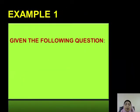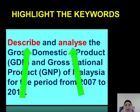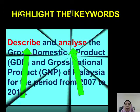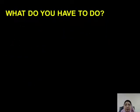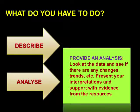Let us look at an example. We first need to identify the keywords. There are two keywords here: describe and analyze. Now that we have the keywords, we have an idea of what to do. The question says describe, so we must provide a description. The question also says analyze, so we need to provide an analysis.